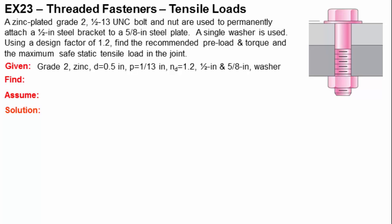The bolt is a 1.5-inch diameter. The pitch is 1-13 of an inch. The desired design factor is 1.2. We are clamping a 1.5-inch, a 5.8-inch, and a washer, all made of steel.